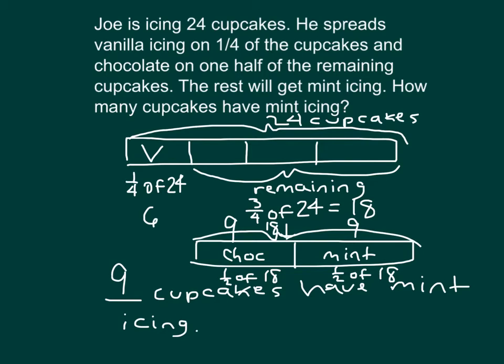If I check my answer, 6 plus 9 plus 9 should equal all of those cupcakes, which is 24. So this was the difference in our tape diagram. In other words, we broke it apart and took one more step. We represented those remaining cupcakes in a new tape diagram.